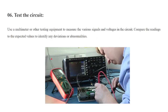The sixth step is to test the circuit. You can test the circuit with different devices like a multimeter or other test equipment to measure various signals like voltage and current. Note down the readings and later compare those values. Use a multimeter or testing equipment to measure various signals and voltages in the circuit. Compare the readings to the expected values to identify any deviations or abnormalities.